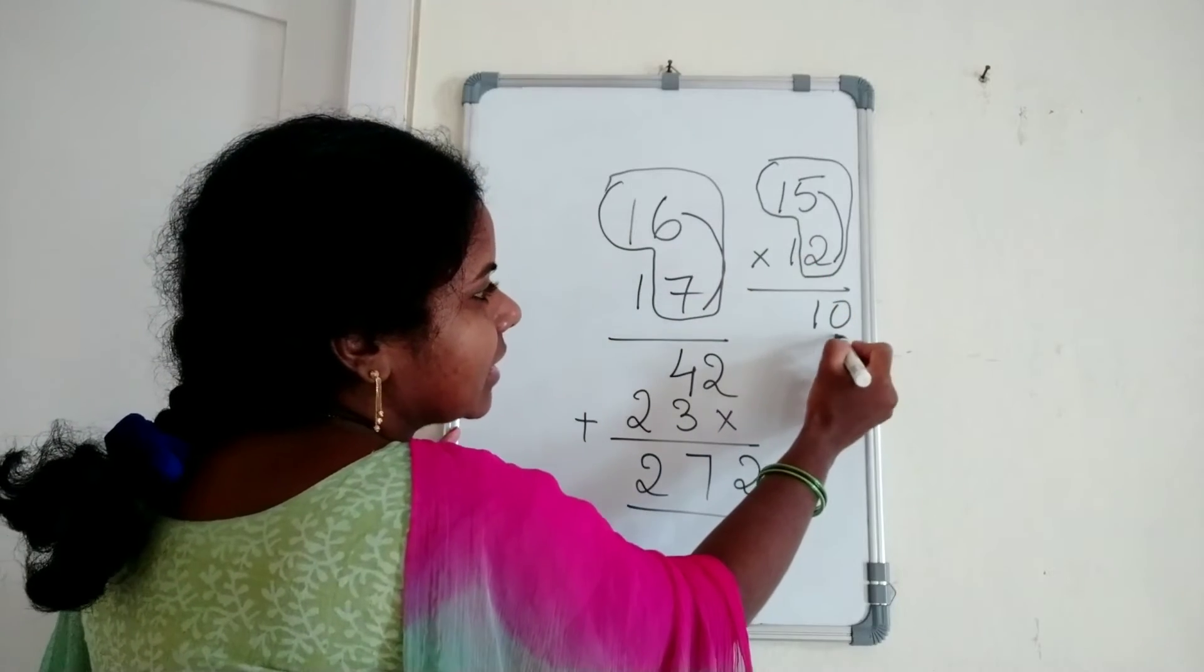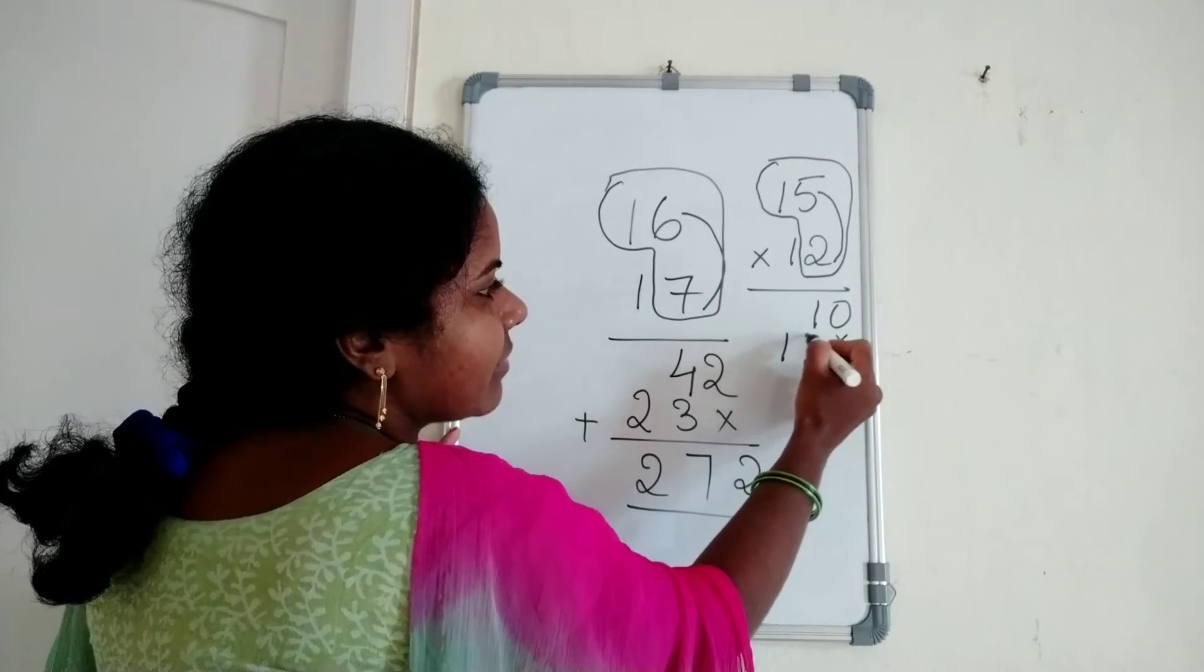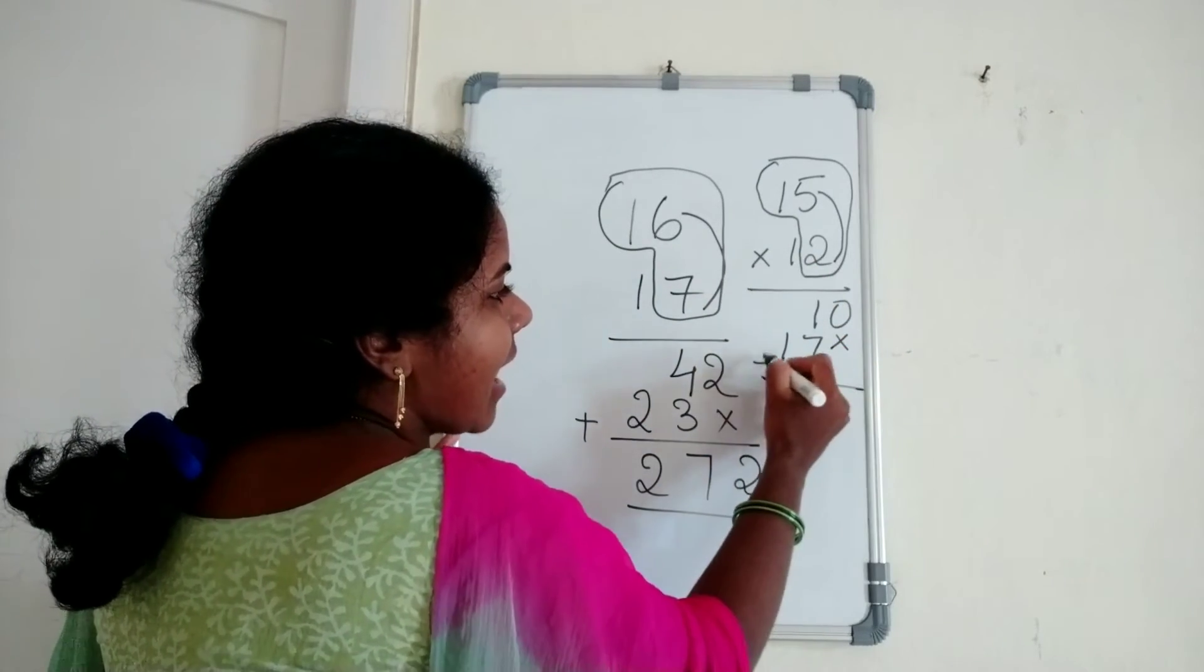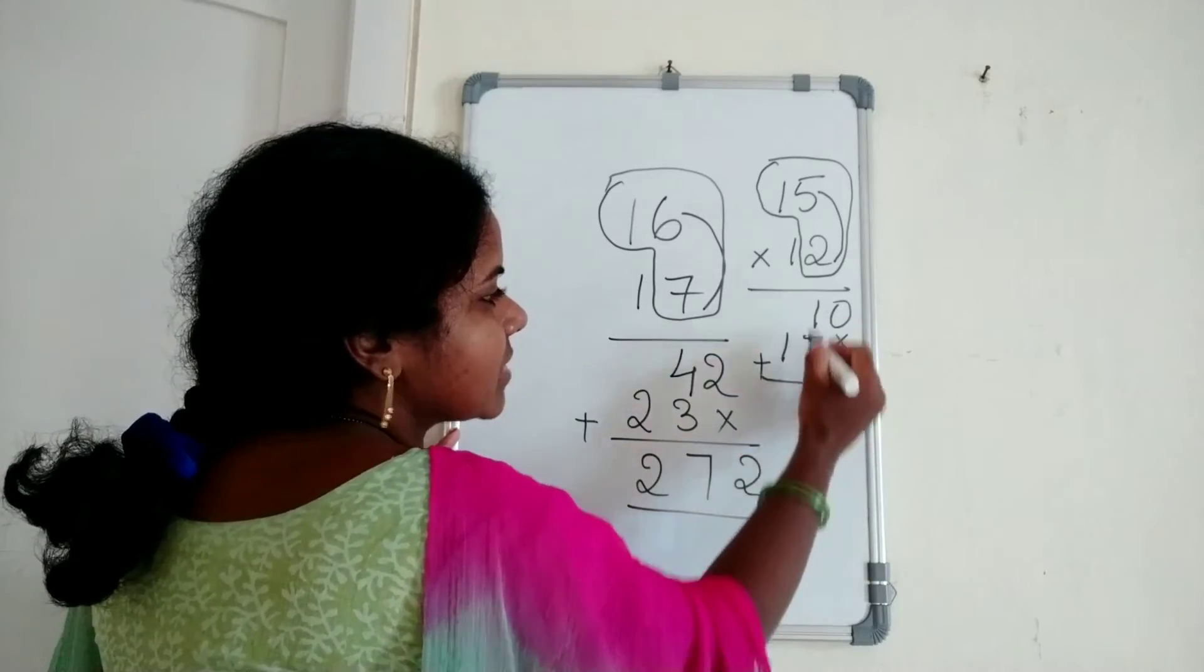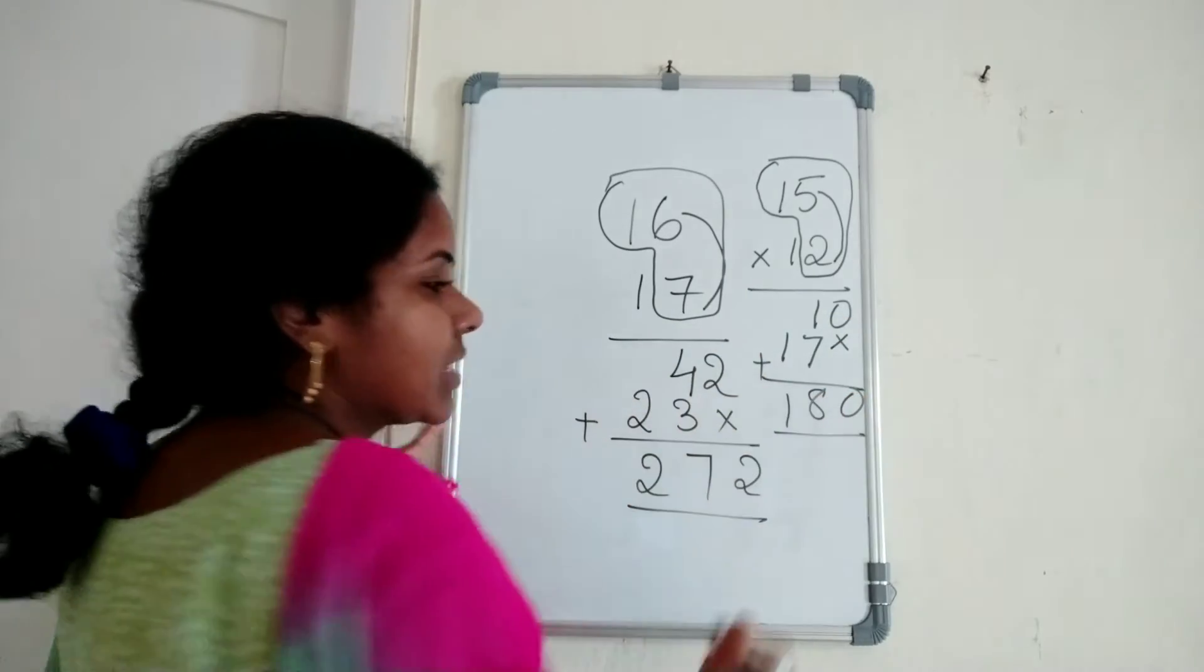Leave the ones place. We have 17. Add just 7 plus 1 equals 8. The answer is 180. Got it?